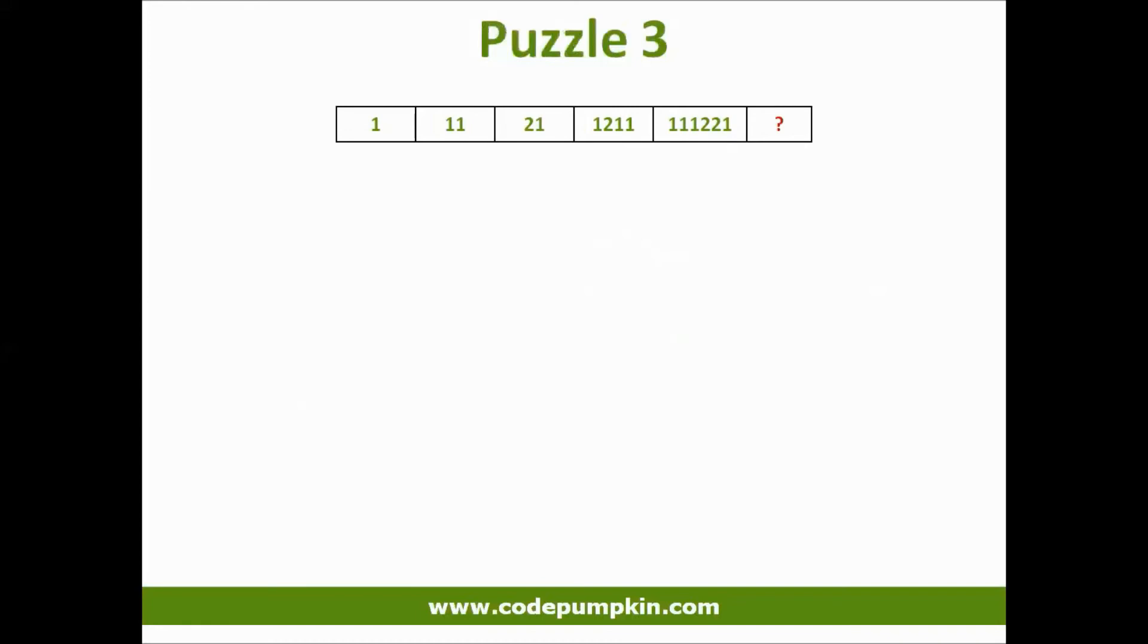If you interpret the elements of the sequence as numerical quantities, there seems to be no obvious pattern. But who said that they are numbers? If you look at the relationship between an element and its predecessor and focus on symbolic content, we see a pattern. Each element describes the previous one.